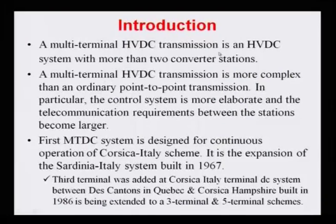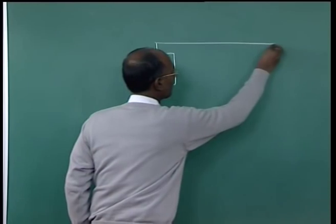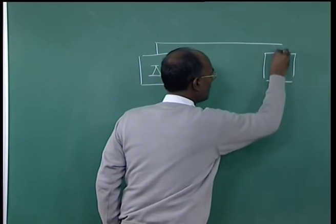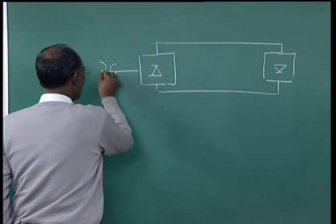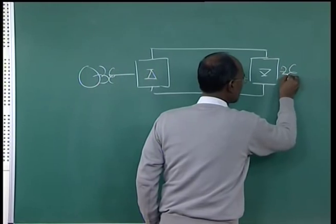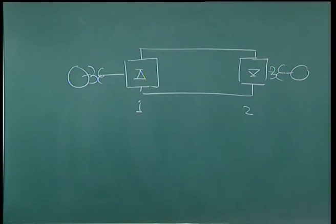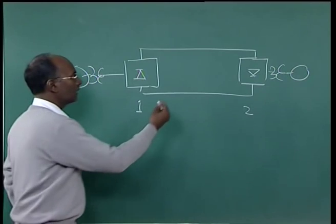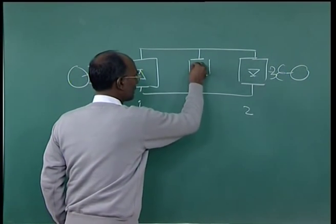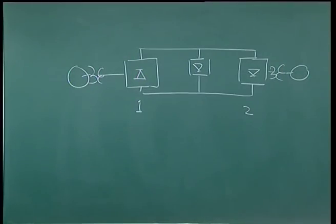A multi-terminal HVDC transmission system is an HVDC system with more than two converter stations. For example, in a two-terminal HVDC system, one terminal works as a rectifier and another as an inverter, connected to AC systems on both sides. If we add more than two converter stations in the DC link — say a third converter station — it is called a multi-terminal HVDC transmission system.